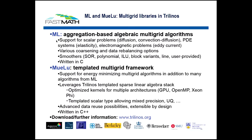Trilinos is, as I mentioned before, a very large package that does almost anything needed in terms of solvers, developed at Sandia National Laboratory. In particular, it has two pieces that are part of the FastMath project. One is ML, which has a new version called MuLU, which are algebraic multigrid methods based on aggregation. You'll learn quite a bit about algebraic multigrid this afternoon in Rob's talk, so I won't go into the details, but ML and now MuLU have a lot of very nice algorithms for solving non-trivial problems with algebraic multigrid.